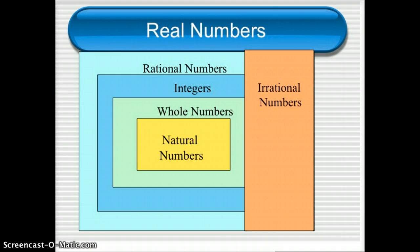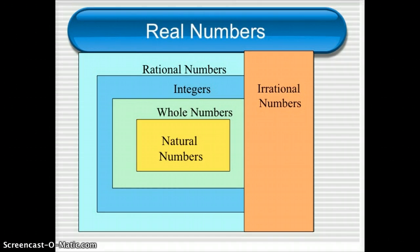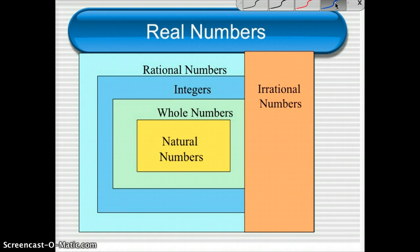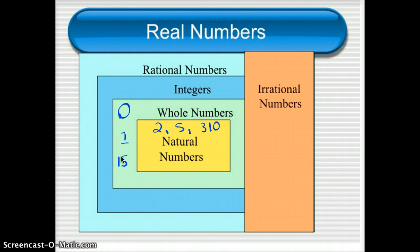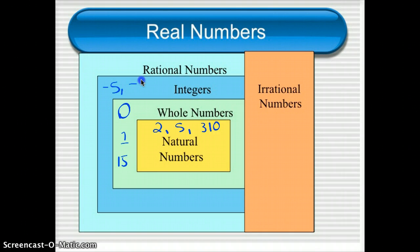Let's look at a chart. This chart shows how the numbers fit together. Starting in the middle, natural numbers — those are counting numbers, so something like 2, 5, 310. Whole numbers include everything in the natural numbers category, but also include zero. So whole numbers include 2, 5, 3, 10, 1, 15, and those are all whole numbers. Moving out to the integers box, everything inside — natural numbers and whole numbers — is also an integer. But integers might have negative numbers too, as long as they're opposites of whole numbers and don't have fractions or decimals. So we might have negative 5, negative 14, or 0, 2, etc.